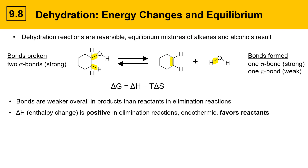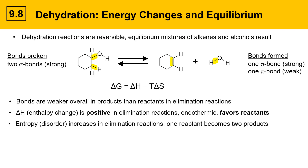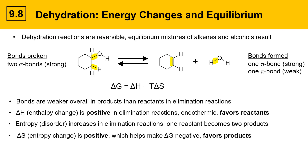In this reaction, we are basically trading in some strong bonds for a weak bond, so bonds overall are weaker in the products than reactants. That means delta H, the enthalpy change, is positive — elimination reactions are endothermic and therefore favor reactants. Entropy, the disorder part of energy, increases in elimination reactions: one reactant becomes two products, which is an increase in disorder and a positive delta S.